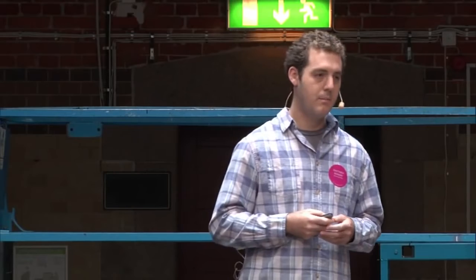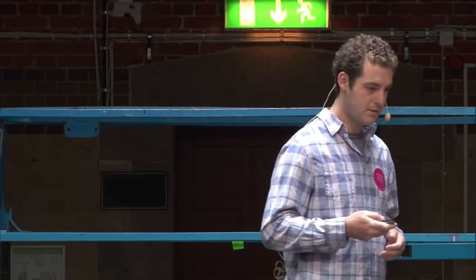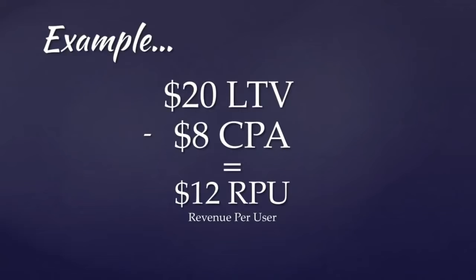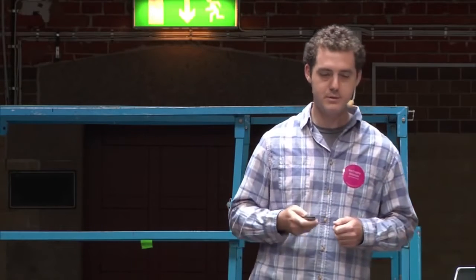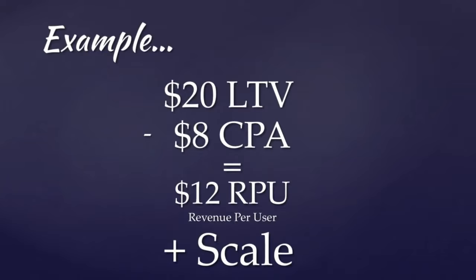We need to be able to do this at scale, because acquiring a few users cost effectively is fine, but acquiring many users cost effectively is what lets us actually build a business. For example, with a 20 kronos LTV and an 8 kronos cost per acquisition, for every 8 kronos we spend, we are actually earning 12 kronos revenue per user. If we're able to do that at scale, we'll be very happy.